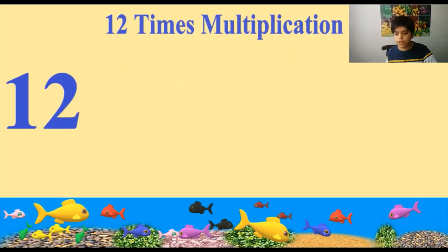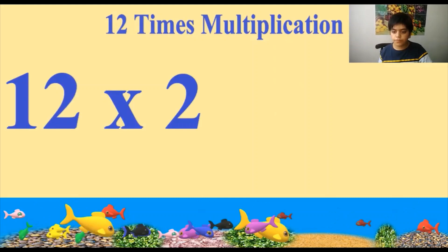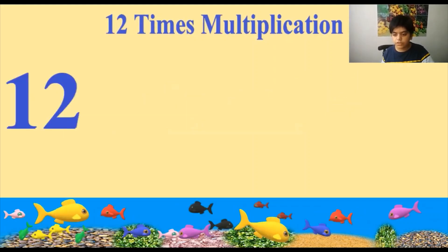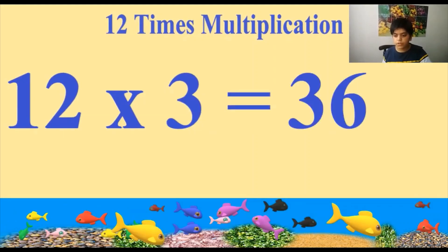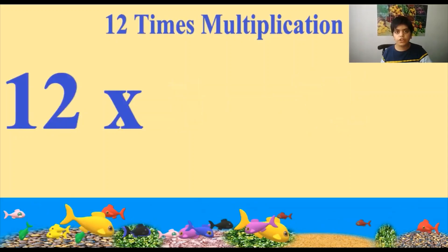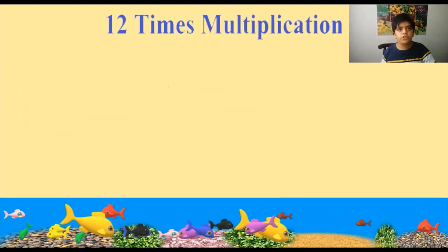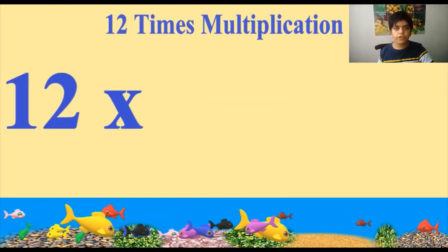Twelve ones are twelve. Twelve twos are twenty-four. Twelve threes are thirty-six. Twelve fours are forty-eight. Twelve fives are sixty. Twelve sixes are seventy-two.